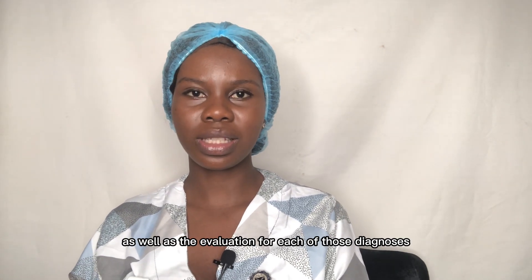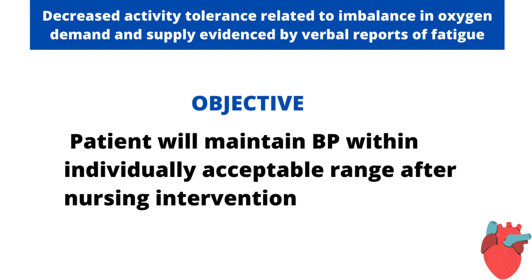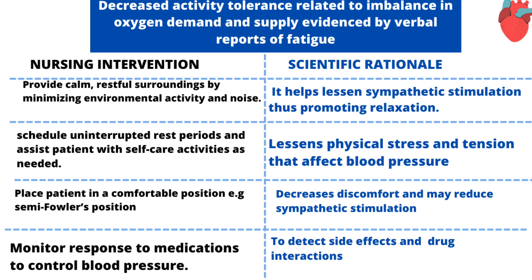Now let's get into the objectives, nursing interventions, scientific rationale, and evaluation for each diagnosis. The objective for the first nursing diagnosis is that the patient will maintain blood pressure within an individually acceptable range after nursing intervention. The first nursing intervention is to provide a calm, restful environment by minimizing environmental activity and noise — limiting visitors and reducing noise such as stereo volumes in the surroundings. The rationale is that this helps lessen sympathetic stimulation and promote relaxation.